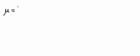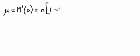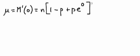In order to find the mean, we need to take the first derivative, and wherever we see a t, insert a zero. So doing that, we get n times 1 minus p, plus p e to the zero, to the n minus 1, times p e to the zero.